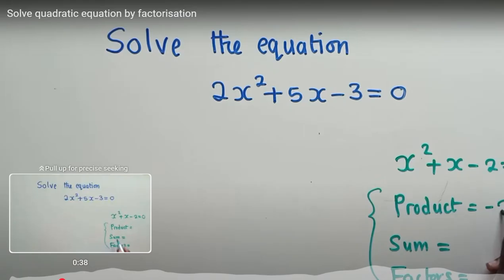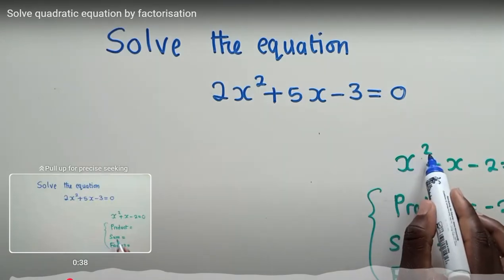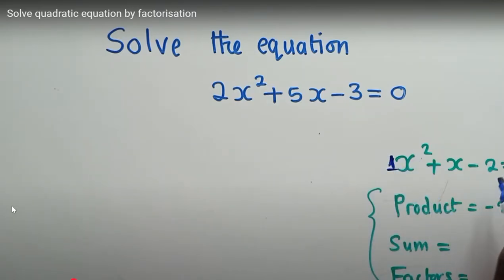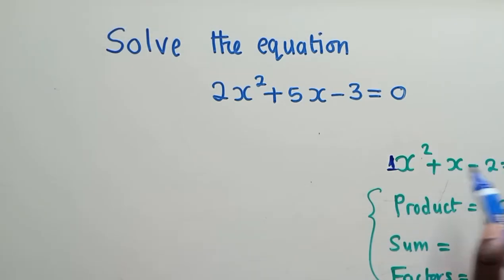Our product will be a negative two. So how did I know that it's a negative two? I just got, or this is what you need to do: you check where there is power two and check the number that is in front. So in this case we have a one, and also check the number that has got no letter, a constant. So it will be one times negative two which is negative two.